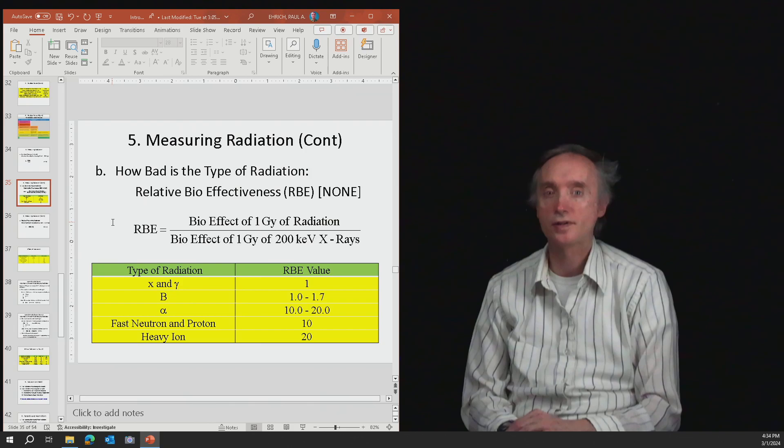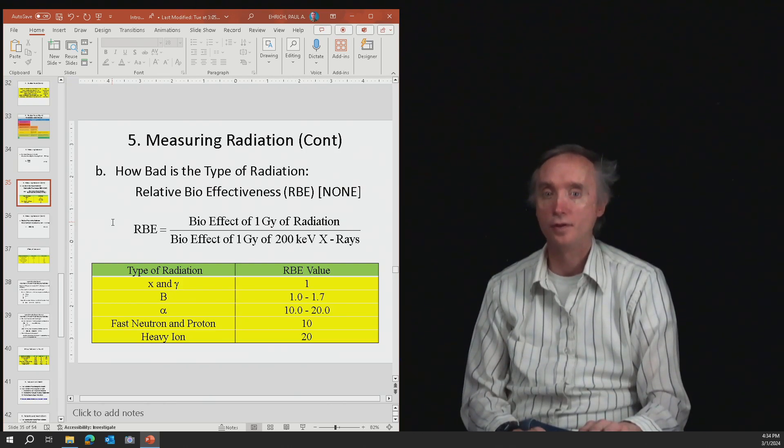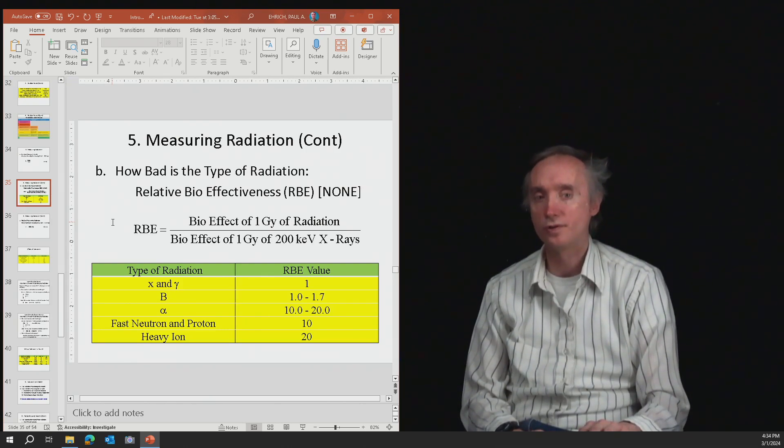Different kinds of radiation have different amounts of lethality. So that's what the RBE takes into account. The RBE stands for relative biological effectiveness. It doesn't have any units. It's just a number. The bigger the number, the more dangerous the radiation is.